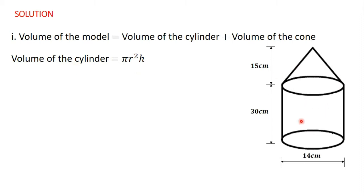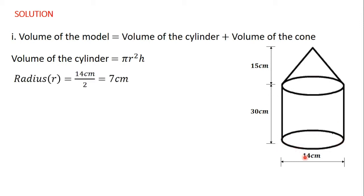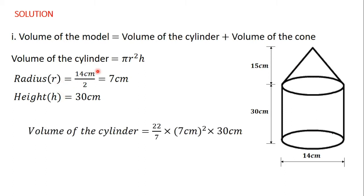From the diagram, the cylinder has a height of 30 centimeters and a diameter of 14 centimeters. The volume of a cylinder is pi r squared h, where h is the height and r is the radius. Since radius equals diameter divided by 2, the radius is 14 divided by 2, which is 7 centimeters. The height is 30 centimeters.